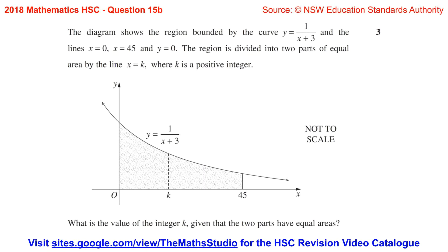Question 15b. The diagram shows the region bounded by the curve y equals 1 over x plus 3 and the lines x equals 0,